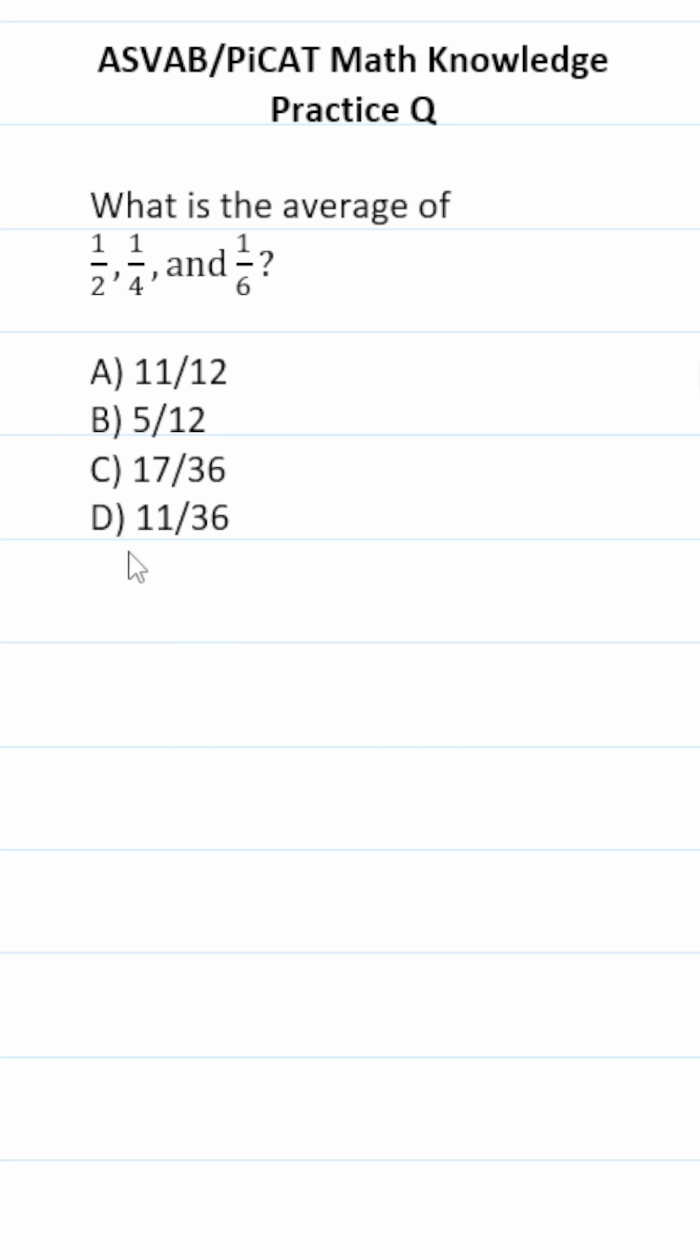ASVAB PiCAT math knowledge practice test question: we're trying to find the average of one-half, one-fourth, and one-sixth. To find the average of numbers, you add those numbers up and divide by how many numbers there are. There are three.